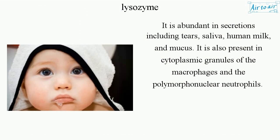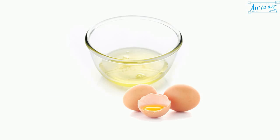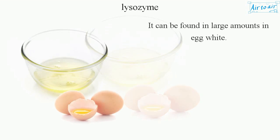It is abundant in secretions including tears, saliva, human milk, and mucus. It is also present in cytoplasmic granules of the macrophages and the polymorphonuclear neutrophils. It can be found in large amounts in egg white.